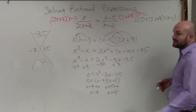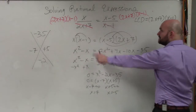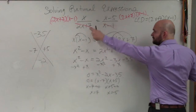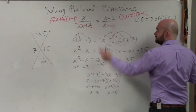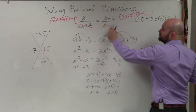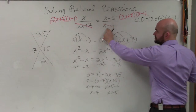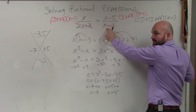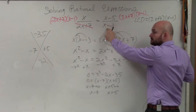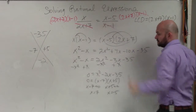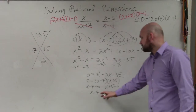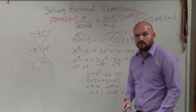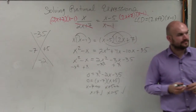Then we go back up to our original problem. If we plugged in 7 or negative 5 into either of these expressions, would it make our denominator 0? No. So we're good. Therefore, those solutions are both going to work out.